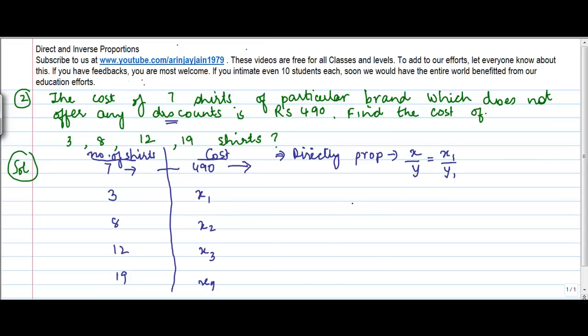Or we can say that 7 upon 490 is equal to 3 upon x. Now if you transpose all these things, you get 7x which means you multiply this by this and multiply this by this is equal to 490 into 3. Dividing both the sides by 7, this goes off. 7 into 70 is 490, so 210. So x1 is equal to 210.